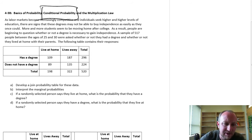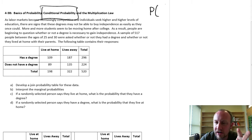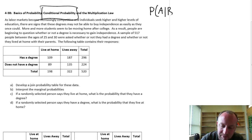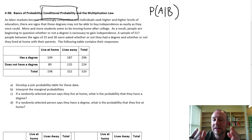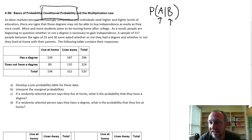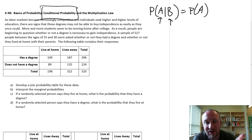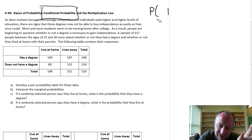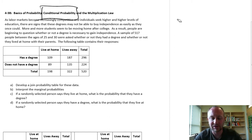Before I get into the problem, let's touch on the notation for conditional probability. Using generic notation: what's the probability of A happening given that B has already occurred? This implies a conditional probability, that there's a dependence — the probability of A occurring is somehow dependent on B occurring. If these are independent, in other words there's no dependency whatsoever, then that probability is just whatever is the probability of A occurring. It doesn't matter whether B happened or not.